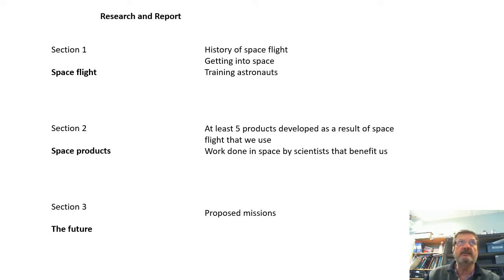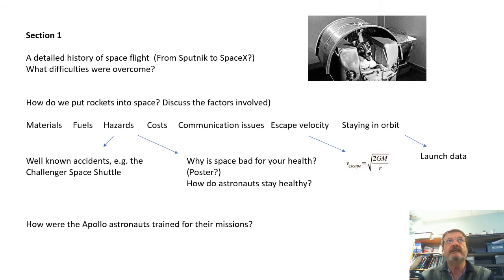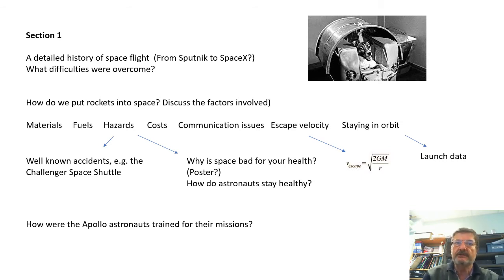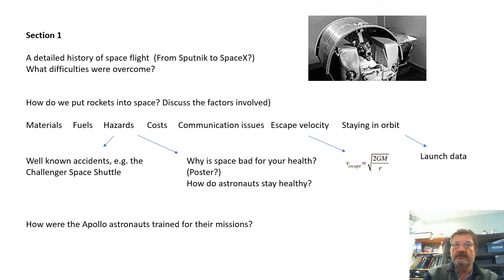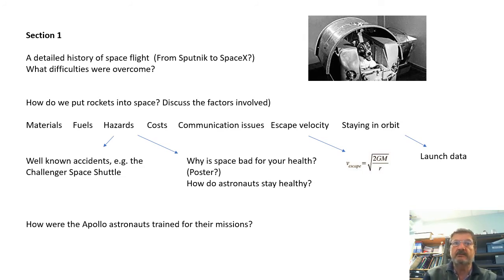In more detail: Section 1 requires a detailed history of spaceflight, from Sputnik — the first ever satellite — all the way up to SpaceX. You won't include every mission, but cover the key ones. You should certainly mention the first person to orbit the Earth, Yuri Gagarin, Apollo 11 and the first people to walk on the surface of the Moon, the Space Shuttle and why it's important, and the Hubble Telescope along with one or two other important telescopes. Also cover what difficulties were overcome for these missions.